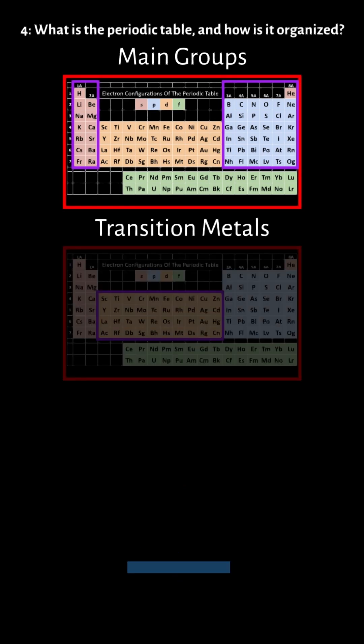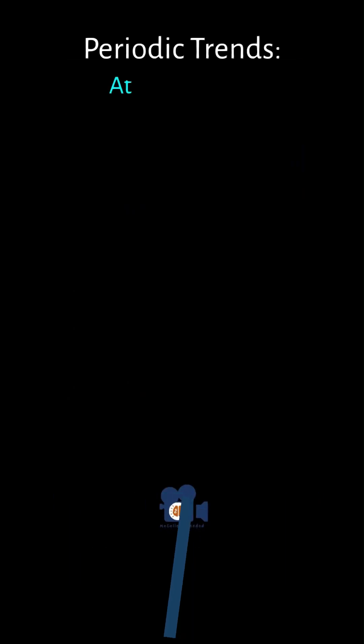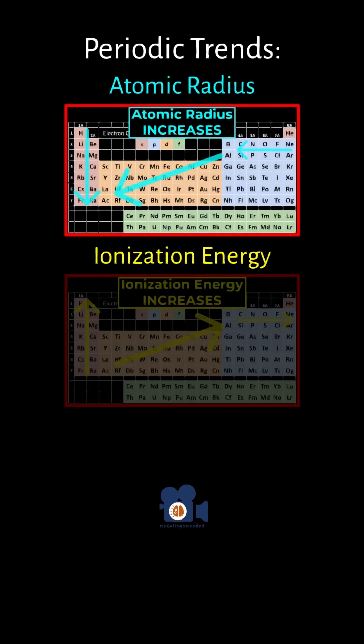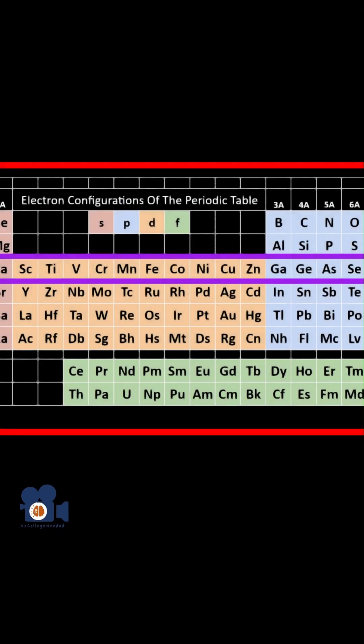Main groups, transition metals, inner transition metals, and by periodic trends such as atomic radius, ionization energy, and electronegativity. Here's a detailed look at the organization.